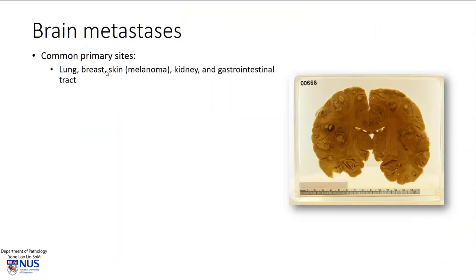Here are some common primary sites that may give rise to metastasis to the brain. We have lung carcinoma, breast carcinoma, skin malignancies — in particular melanoma — renal cell carcinoma or kidney malignancies, and carcinoma of the gastrointestinal tract. Sometimes the brain is actually the first clinical manifestation of underlying malignancy, and we will have to think especially of these possible sources.